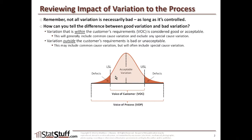Any part of the process that falls within the voice of the customer, within the range of the lower and upper spec limits, is acceptable variation — good variation. It tends to be more common cause variation. But actual performance might be reflected by what falls well outside of those customer requirements, which reflects the voice of the process, or VOP.